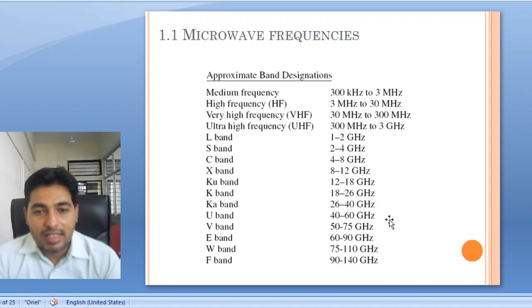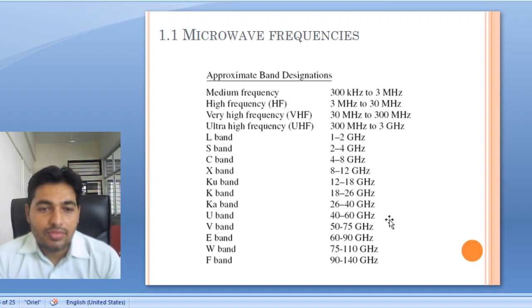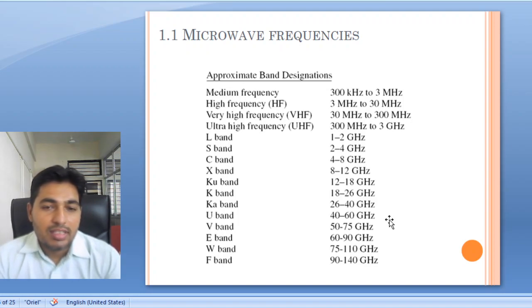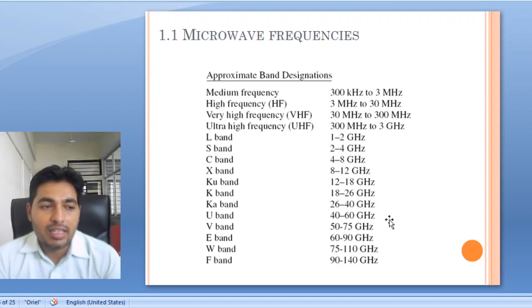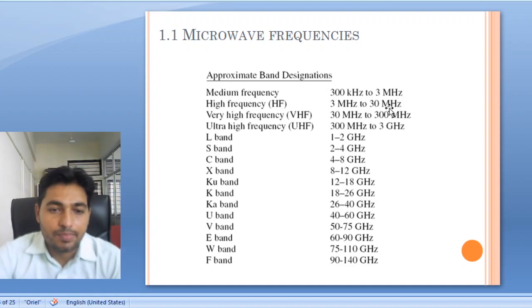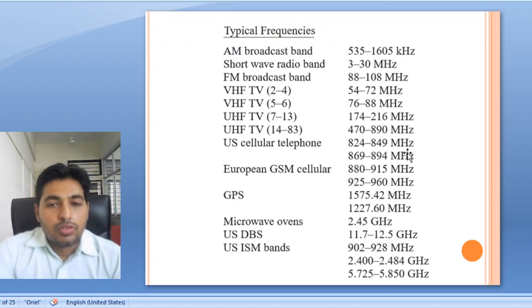Each band has different applications, and depending upon the application we can allot the frequency band. These bands are allotted because these are the standard frequencies designated to each band, so whatever component you take from anywhere will have a standard size. That's why standardization has been done. Typical frequencies and their uses are given here.